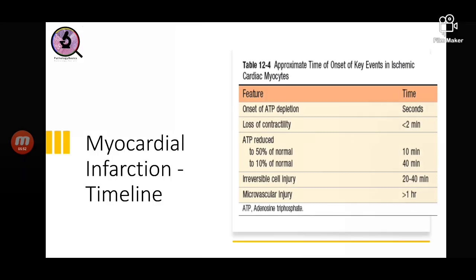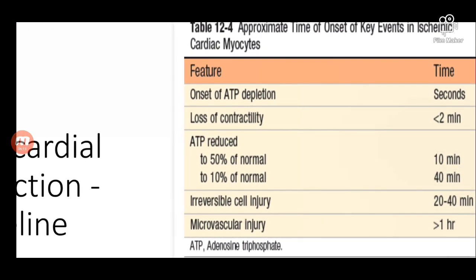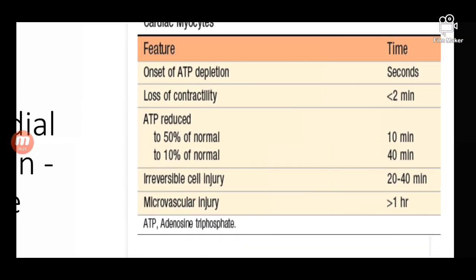If angina is not controlled or the atherosclerotic plaque occludes nearly 90 percent of the lumen, myocardial infarction happens. Within seconds of vessel occlusion, ATP depletion starts. In less than two minutes there is loss of contractility — first the function of the myocardium goes down. When ATP is reduced to 50 percent of normal within 10 minutes, it reaches just 10 percent of original levels.